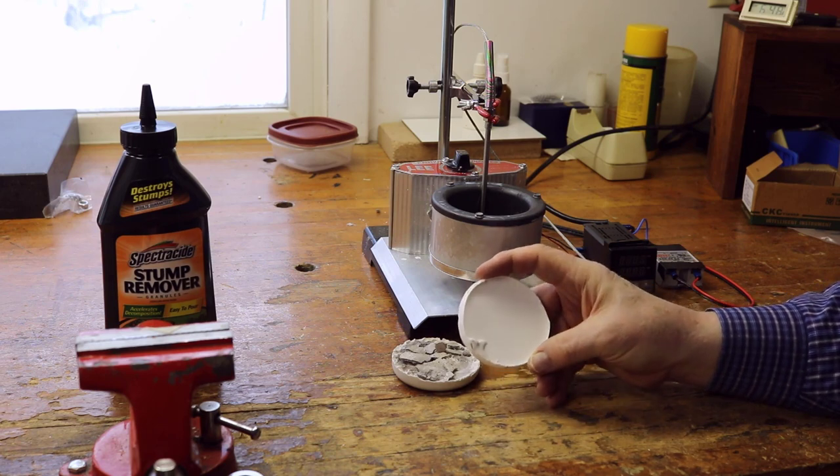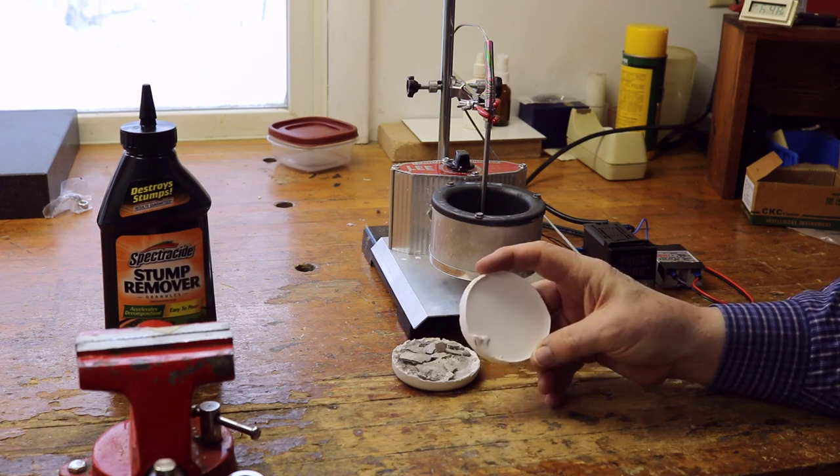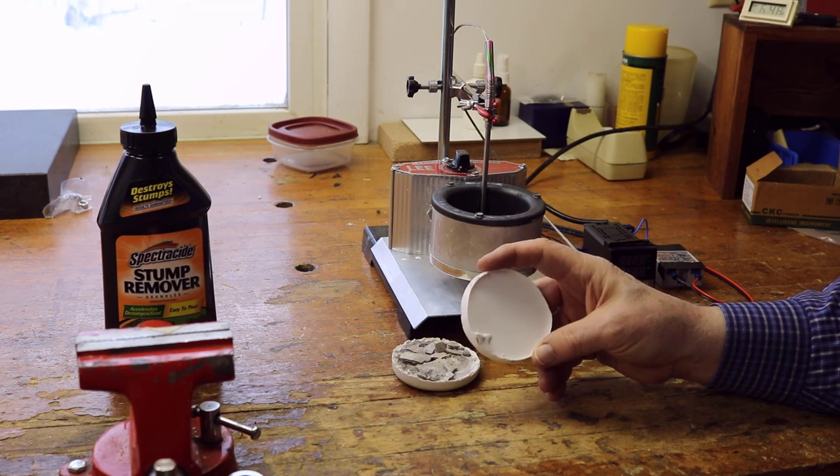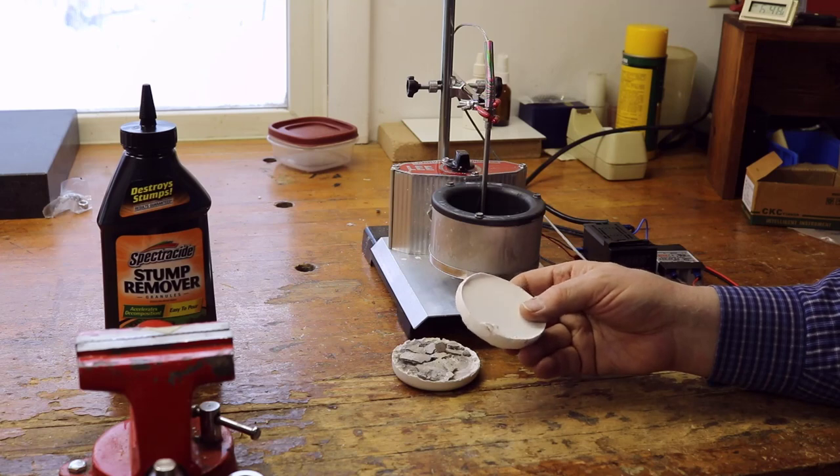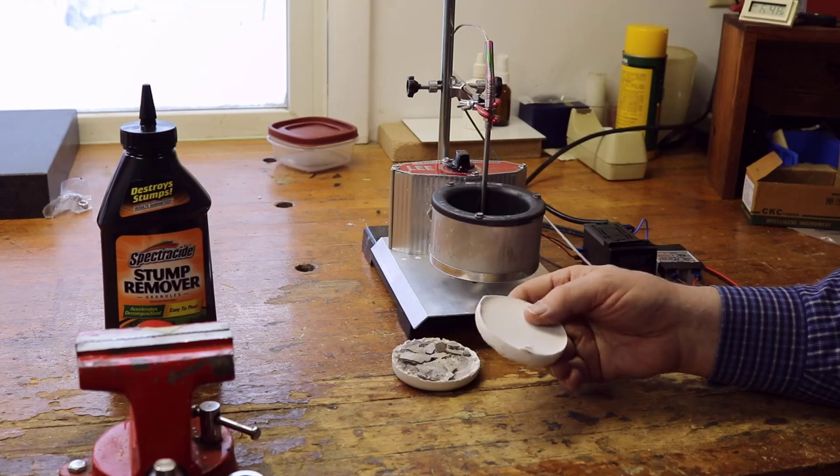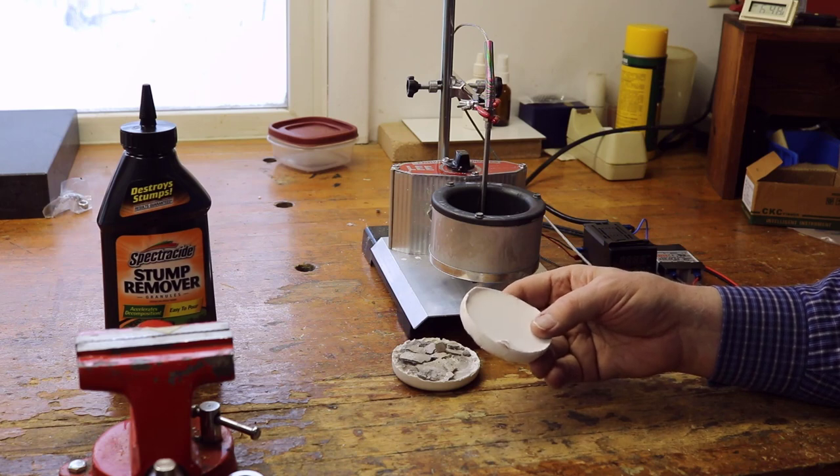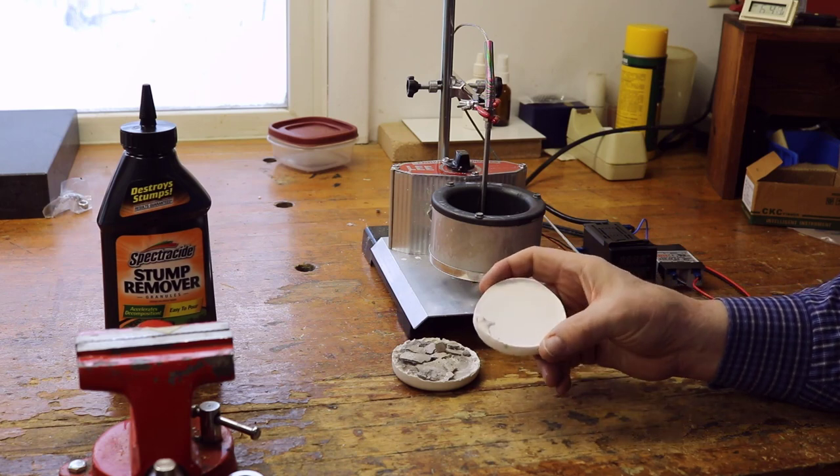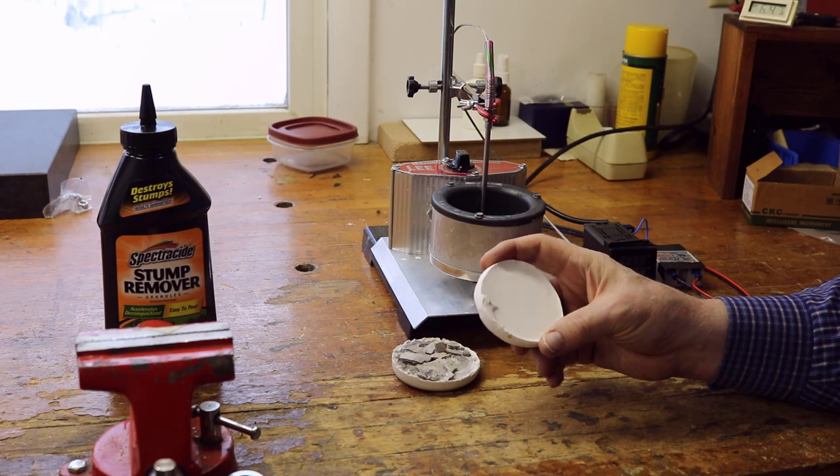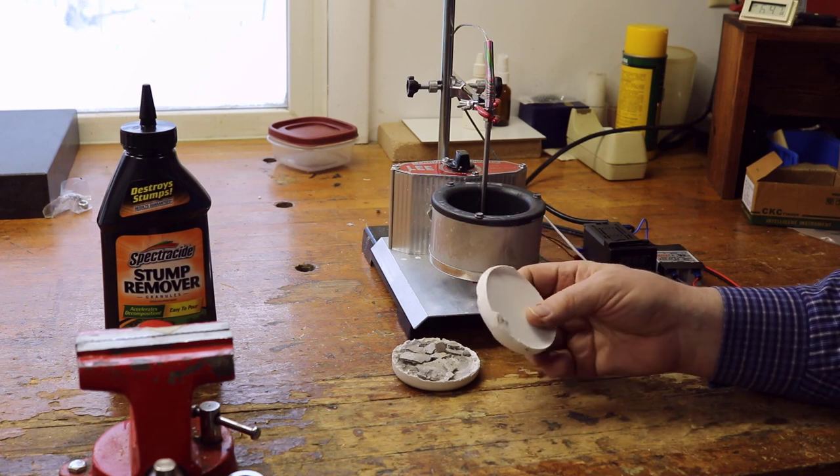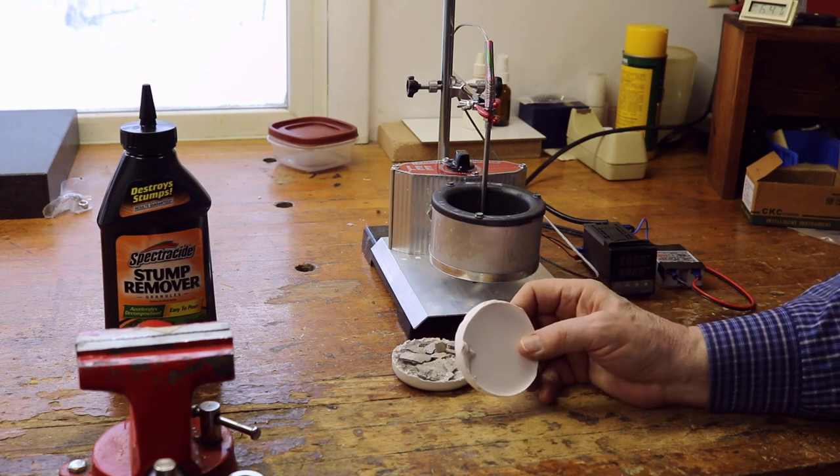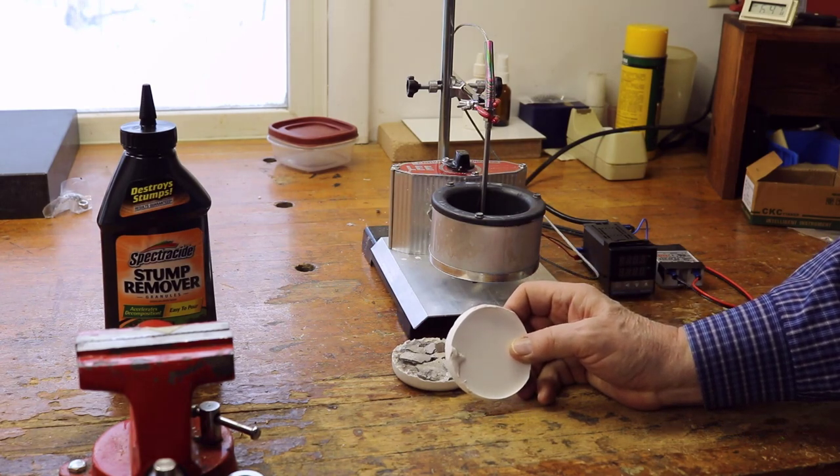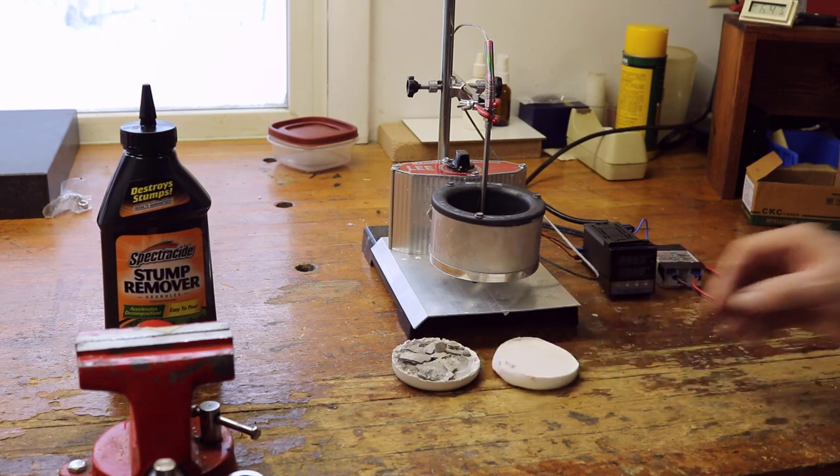Some people have asked, can we use pure potassium nitrate? It melts in the right range and so forth, and the answer is yes you can, but it has a little side effect that you won't like. And the side effect is that when it solidifies it expands, so it's going to be very firmly wedged in the bottom of your melting pot. And if you use the recommended mixture, that isn't a problem.